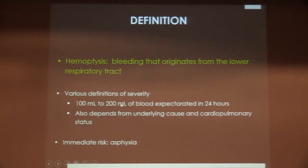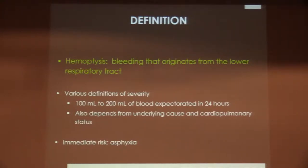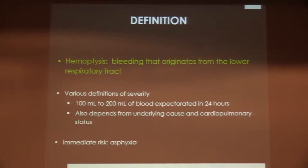Haemoptysis is defined as bleeding that originates from the lower respiratory tract. There are various definitions of severity, and it also depends on the underlying cause and the cardiopulmonary status. The immediate risk for severe haemoptysis is asphyxia, and it is really a very urgent situation.